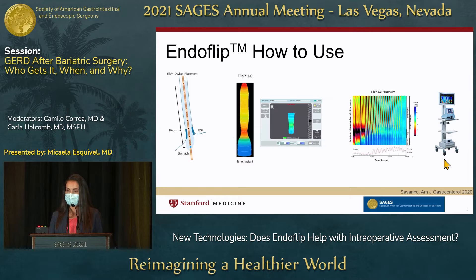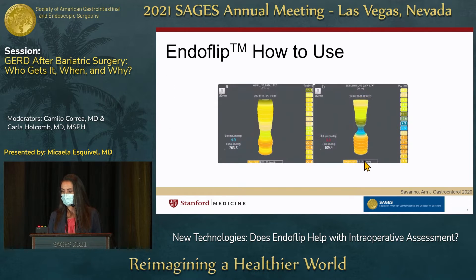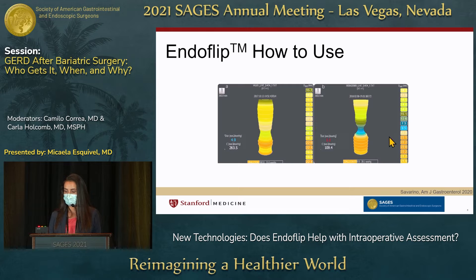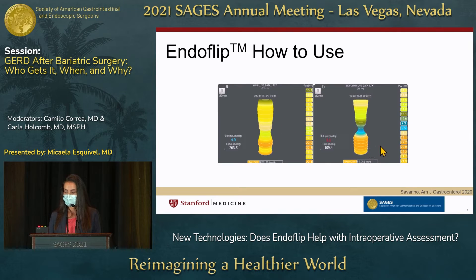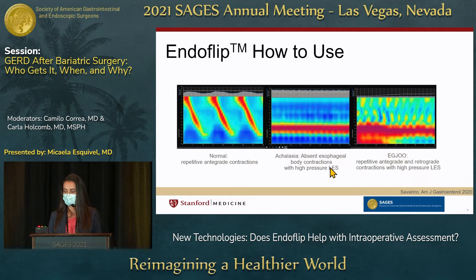This is what the actual console looks like that you can have by the patient's head during endoscopy. Even just visibly looking at these images, you can see on the right a tighter, lower distensibility, lower diameter LES compared to the one on the left. You can have immediate measurements of diameter, distensibility, and pressure within each image.